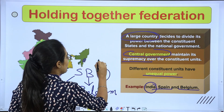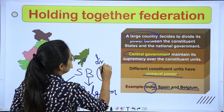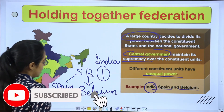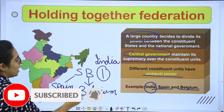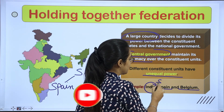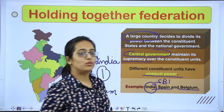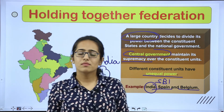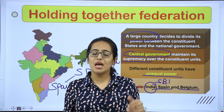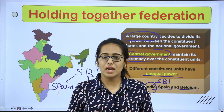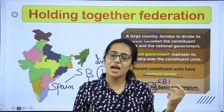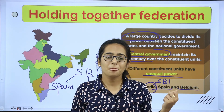So the examples are Spain, Belgium, India — remembered through the word SBI. For Coming Together we remember USA, and for Holding Together we remember SBI. Correct?